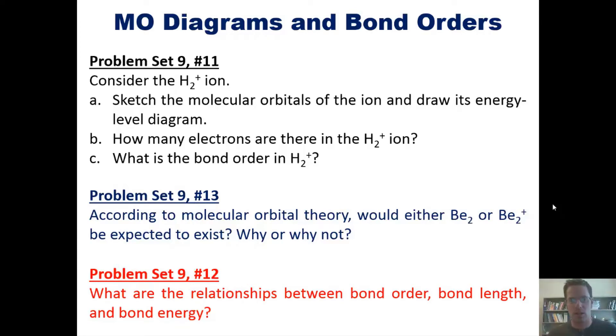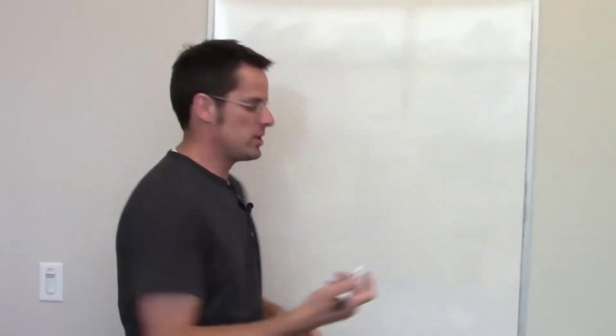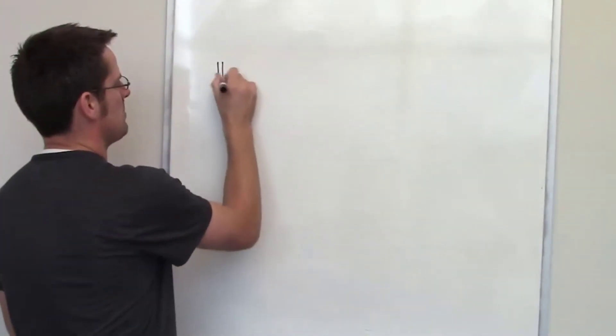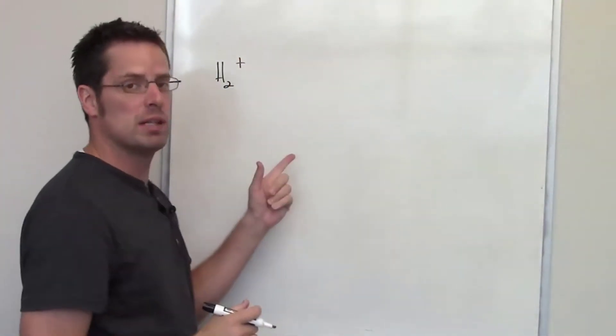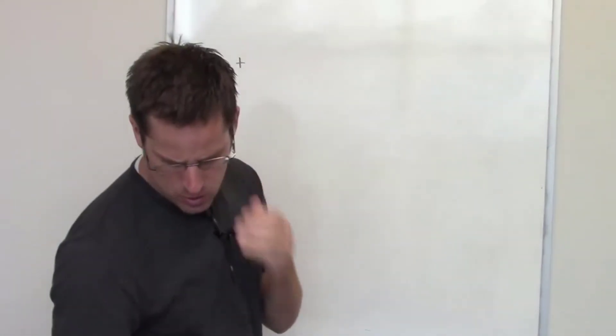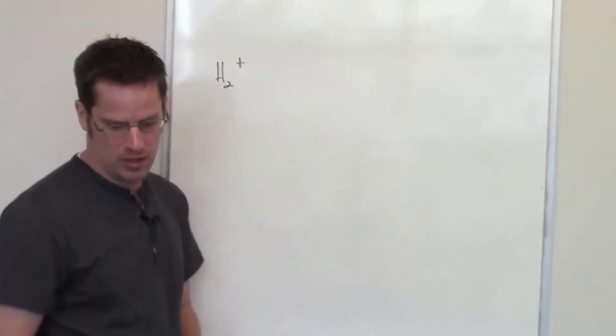Now, I'd like you to try and do these on your own if you'd like to pause the video now and attempt to do so. If you want, you're welcome to stay tuned while I answer each of these in turn on the board. This first question asks us to consider the hypothetical molecule H2 plus. It then asks us to sketch a molecular orbital energy diagram.